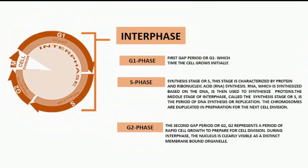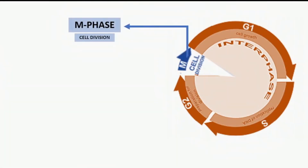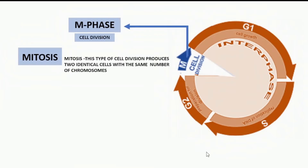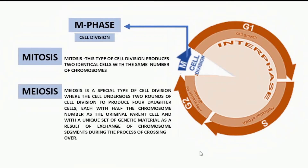The synthesis stage is the period of DNA synthesis or replication. The chromosomes are duplicated in preparation for the next cell division. The third one is the second gap period or the G2 phase, which represents a period of rapid cell growth to prepare for cell division. During interphase, the nucleus is clearly visible as a distinct membrane-bound organelle. Alternating with the interphase is the cell division phase or M phase. In eukaryotic cells, there are two types of cell division: mitosis and meiosis.